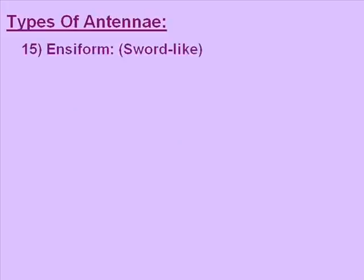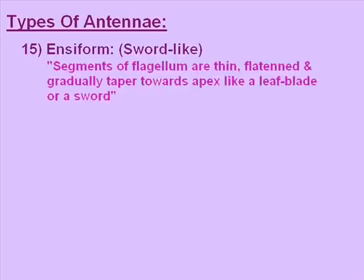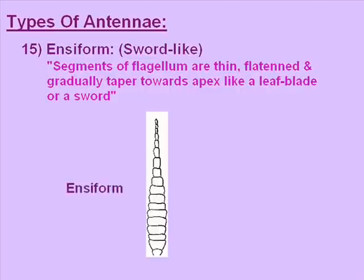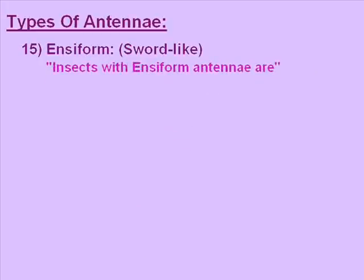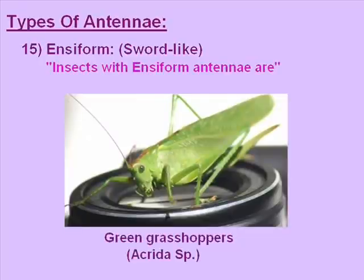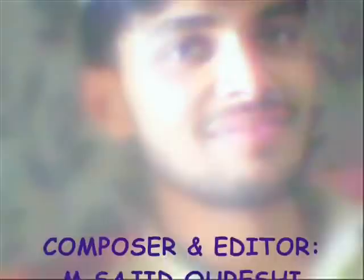The fifteenth and last type is ensiform antenna, meaning sword-like. The segments of the flagellum are thin, flattened, and gradually taper towards the apex like a leaf blade or sword. The picture shows the flagellum thin, flattened, and gradually tapering towards the apex. Insects with ensiform antennae are green grasshoppers and Acridus species. This concludes our discussion. Thank you, and I am Muhammad Sajid Qureshi. Goodbye and Allah Hafiz.